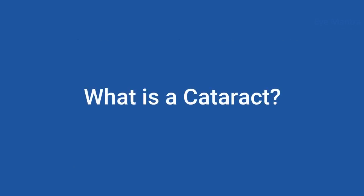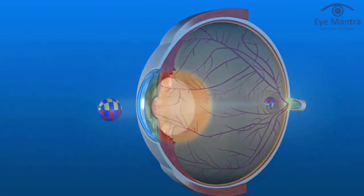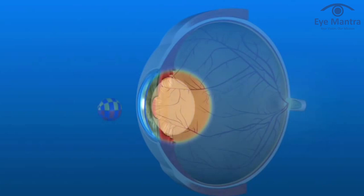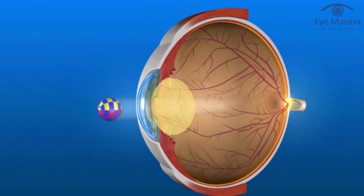Let's begin with what is cataract. Cataracts are a clouding of the lens of the eye. Most cataracts develop slowly and don't disturb vision early on. Over time, the cataract will eventually interfere with your vision due to the cloudiness in the lens, blurring or distorting light as it passes through to focus on the retina at the back of the eye.